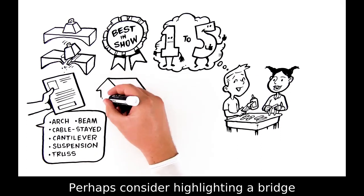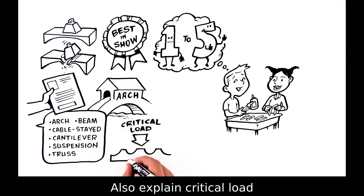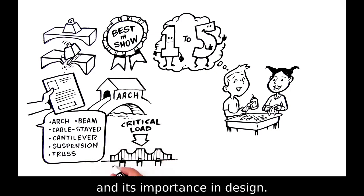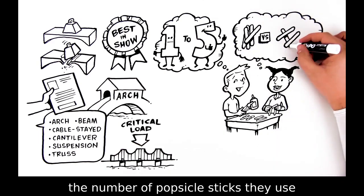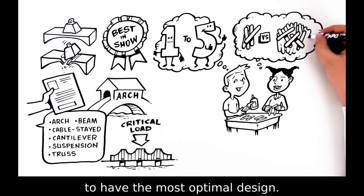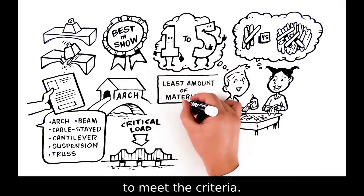Perhaps consider highlighting a bridge in the community and which type it is. Also explain critical load and its importance in design. Challenge students to be frugal with the number of popsicle sticks they use to have the most optimal design. Engineers always seek to use the least amount of materials needed to meet the criteria.